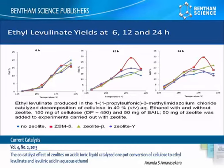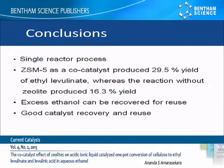At 12 and 24 hours, zeolite-added samples gave higher ethyl levulinate yields. Especially higher yield enhancements are found with ZSM-5 at 175 degrees Celsius. In this one-pot process, ZSM-5 zeolite showed the highest co-catalytic effect with the highest ethyl levulinate yield of about 30%.